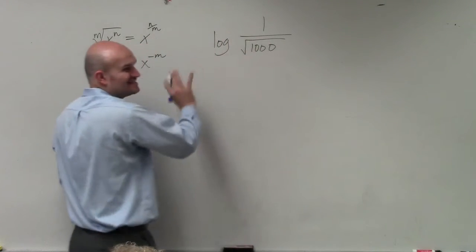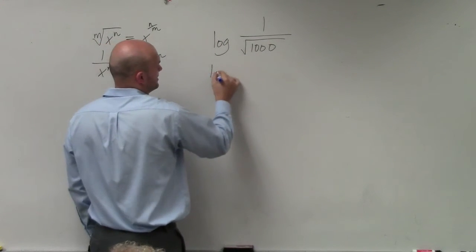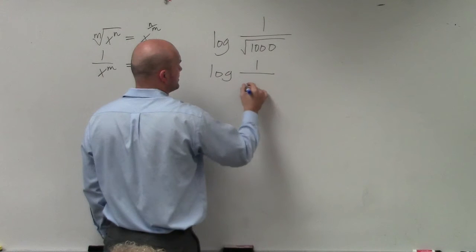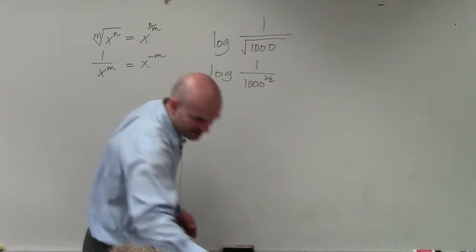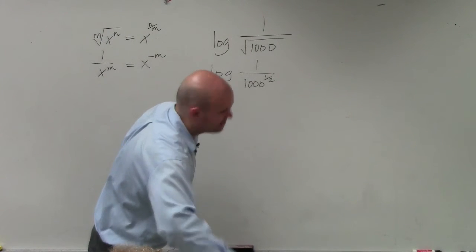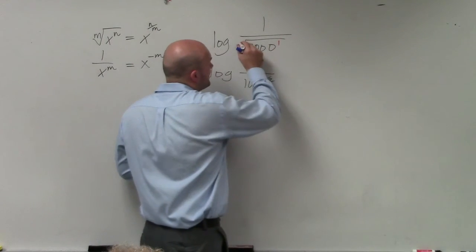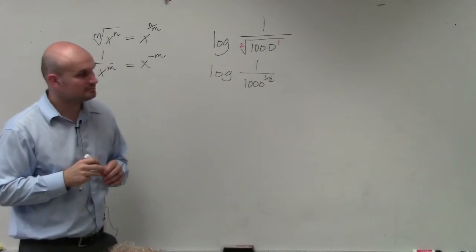So let's take this and make it not complicated anymore. Let's get this to 1 over 1000 to the 1/2 power, because technically we don't write it, but technically there's a 1 there and there's a 2 there.